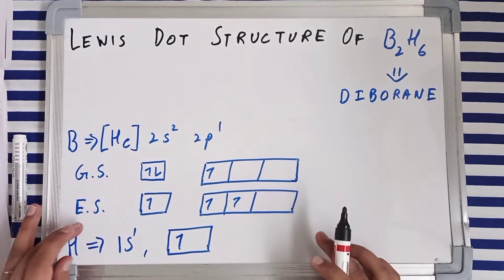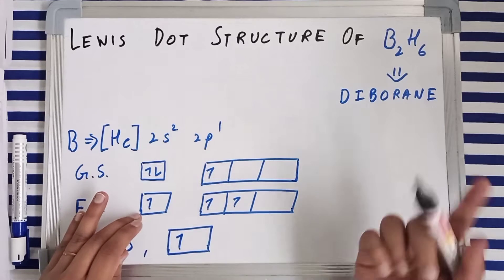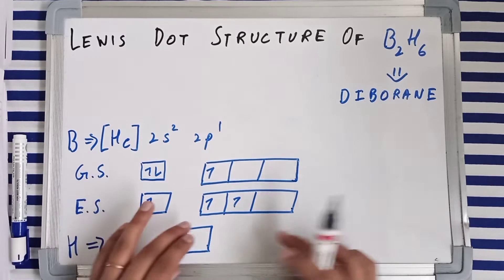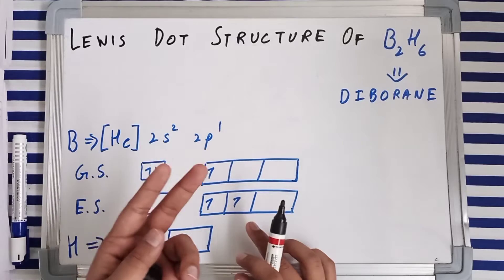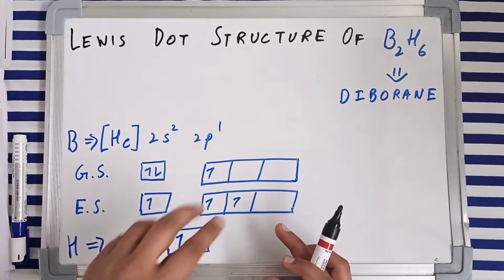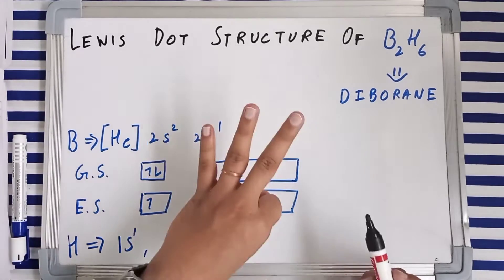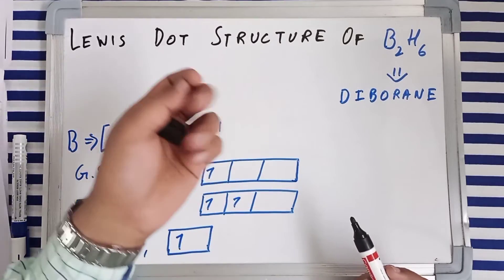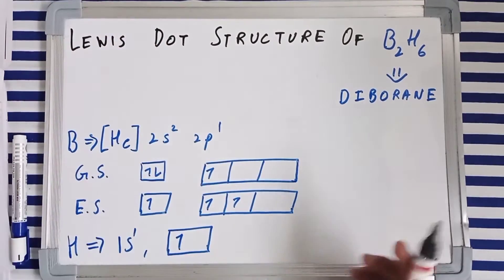But in excited state, boron has got just a single electron in the 2s subshell and two unpaired electrons in two different orbitals in the 2p subshell. So you have got three unpaired electrons, and now boron in excited state can make three bonds.